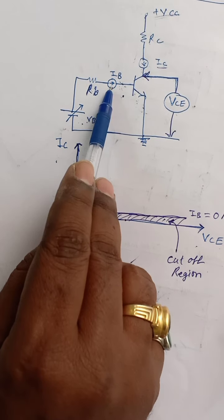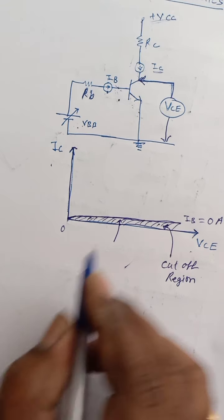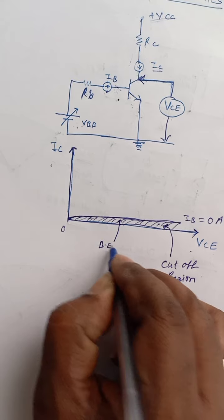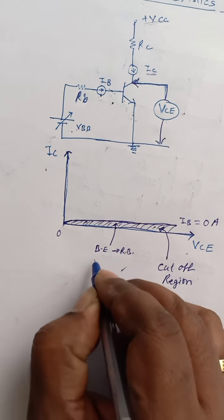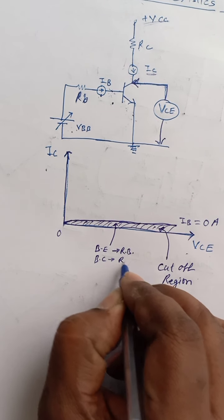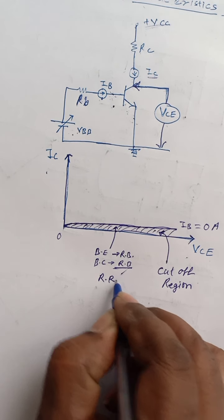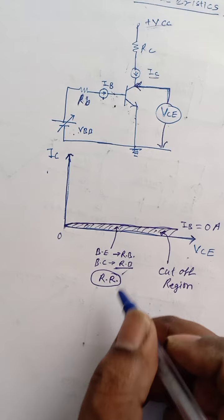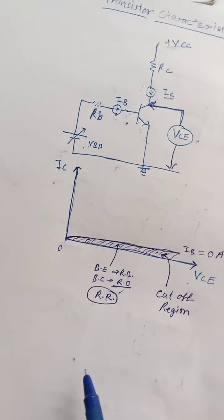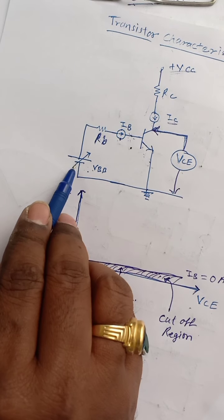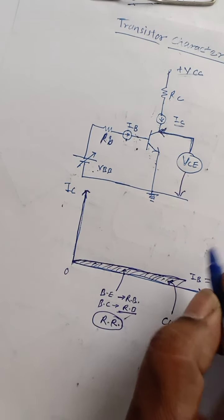Base-to-emitter junction is reverse biased because base voltage is 0. This is the RR state of the transistor biasing in which it acts like off — it is in off state. This region is known as cut-off. As we increase the base voltage, small current flows through the base-to-emitter junction and IB increases.